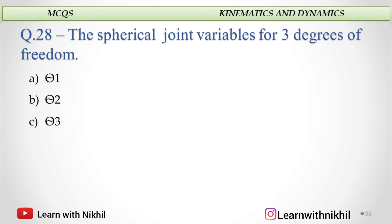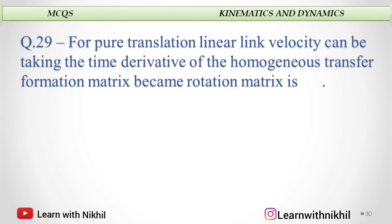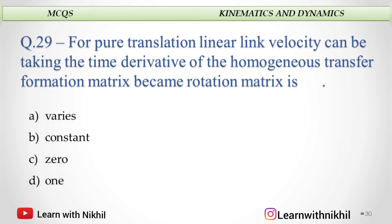The spherical joint variable for 3 degrees of freedom has theta 1, theta 2, and theta 3 — for spherical joints we have three angles. For pure translation, linear link velocity can be found by taking the time derivative of the homogeneous transformation matrix; the rotation matrix becomes constant. The answer is constant.